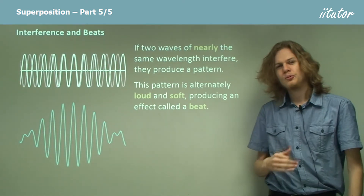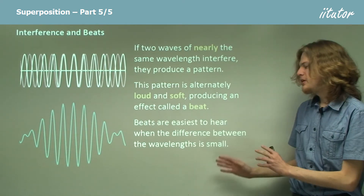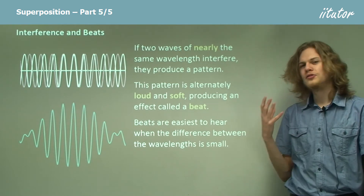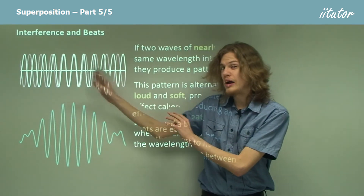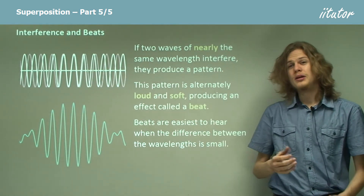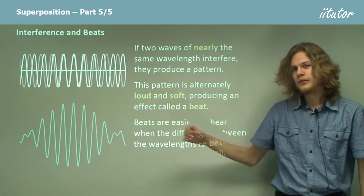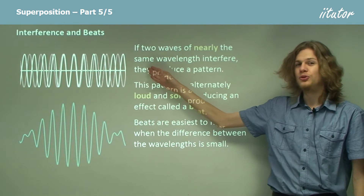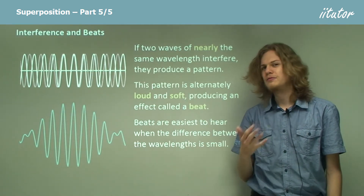In physics we call this effect a beat. Beats are easiest to hear when the difference between the wavelengths is very small, because with only a small wavelength difference between the red wave and the white wave, the beat will be very long. Whereas if there's a big difference between the two waves, the beat might happen so quickly that we can't even pick it up.